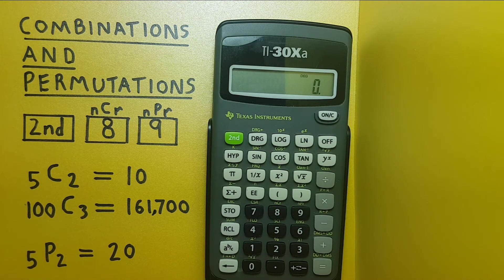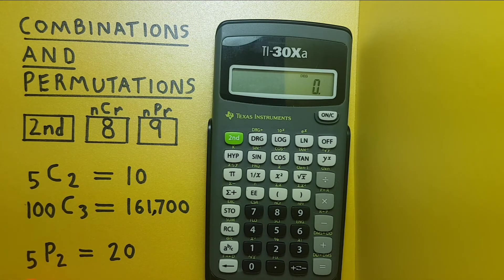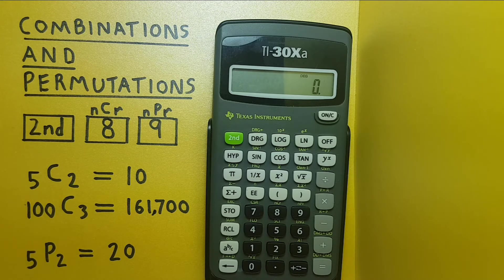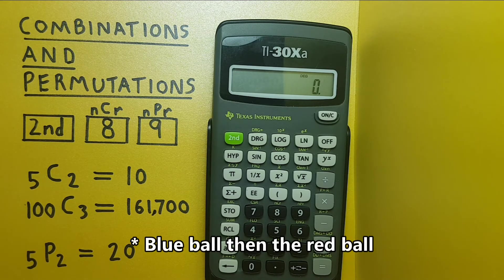Okay, how about permutations? In permutations you're choosing objects from a set again but in this case the order does matter. So if we choose the red ball and then the blue ball, this is a different situation than if we choose the blue ball and the red ball. It would count as two results rather than one.